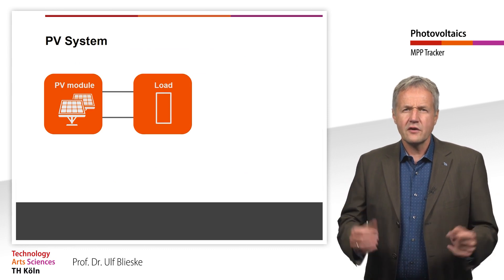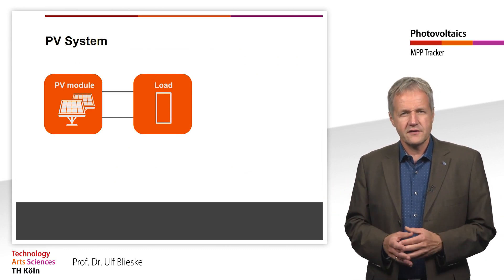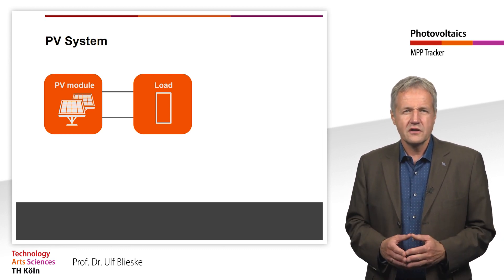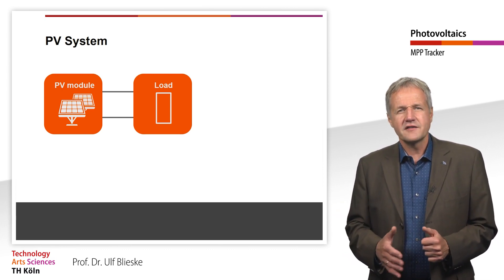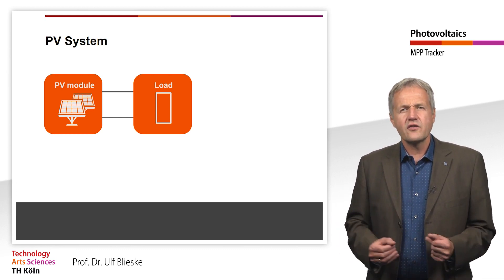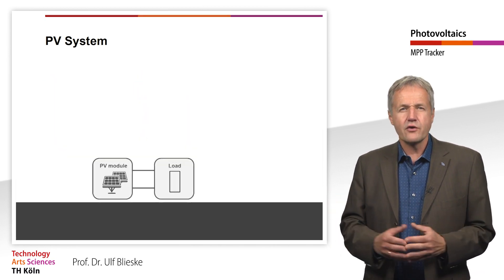In this and the following chapter we will turn to PV systems. We will first look at a very simple PV system. We connect a solar module with a very simple load, an ohmic resistor, for example a light bulb. To understand what is happening next, let's briefly recall.